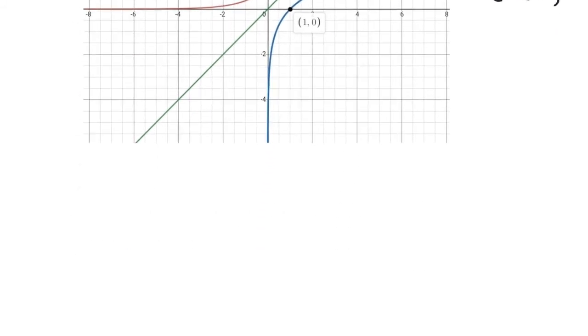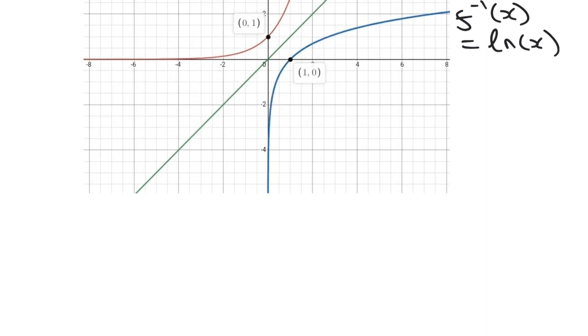Now something which is very interesting, we can now state the domain or the x values that this inverse function of f, which is the ln function, takes on. So the domain is the x values greater than 0, because we can see that the y-axis is the asymptote of this function. So it would be all the real values of x, but only the positive values.